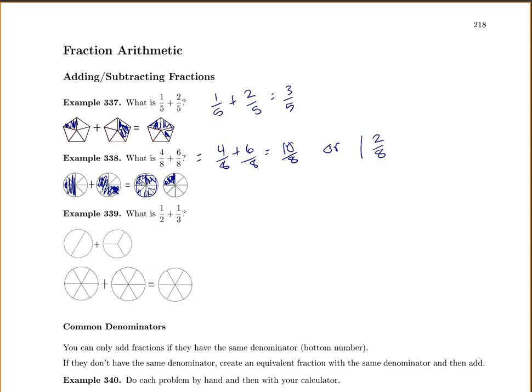And my next example, what is one half plus one third? So we start with one half and then we have one third. But when I try and add them together, I don't really have any way to add them together. So what we could do is we could add a few more lines to make it so they're similar shapes.